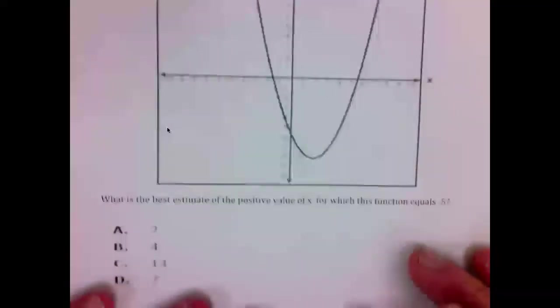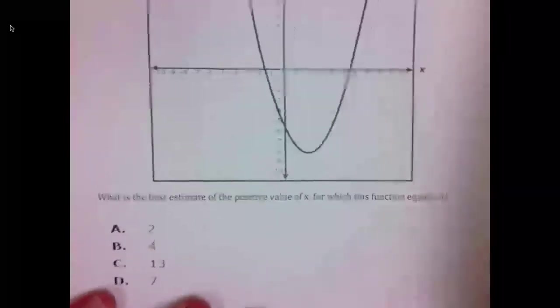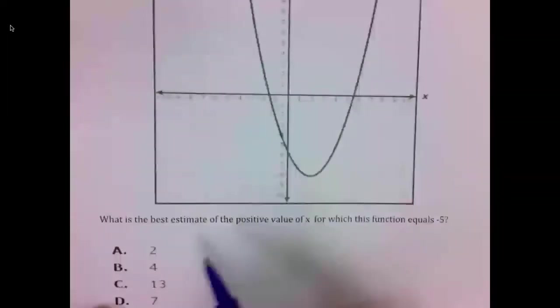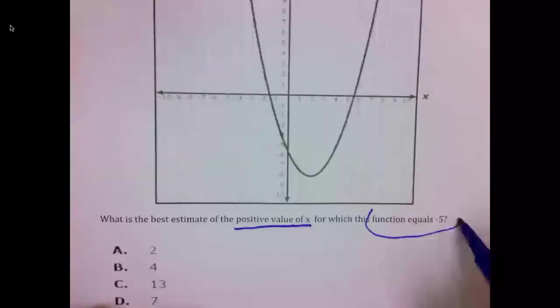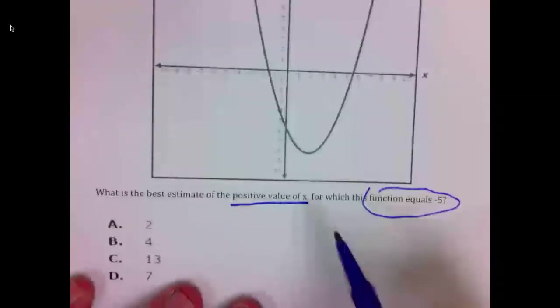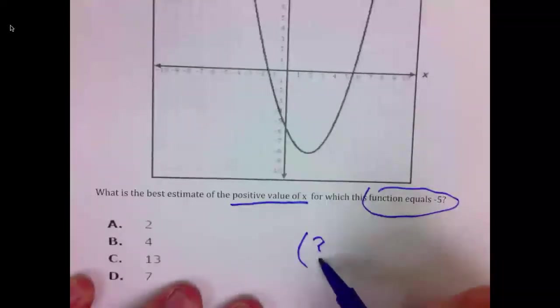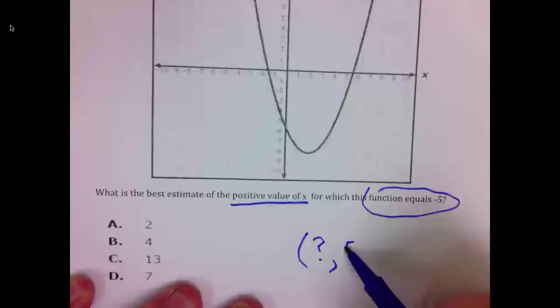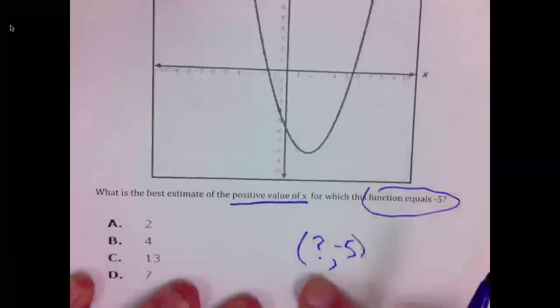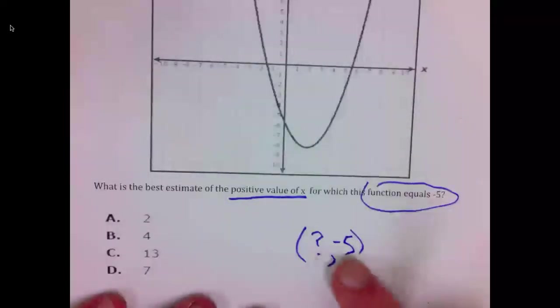Number two. What is the best estimate of a positive value of X for which the function equals negative five? We're looking for an X, so they must be giving us a Y. The Y they're giving us is negative five. The question is, what X produces a Y of negative five?